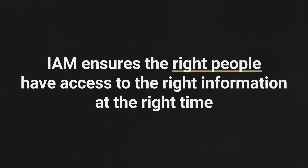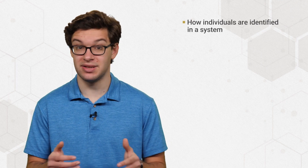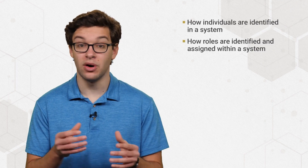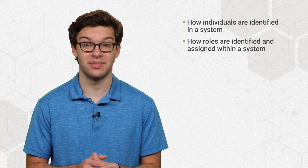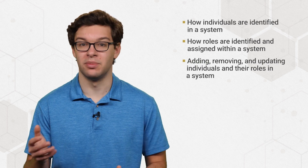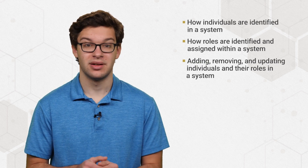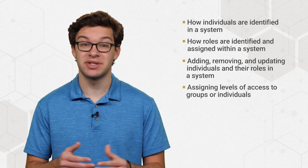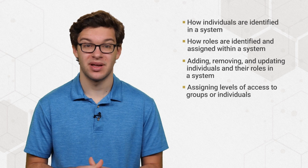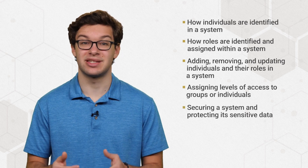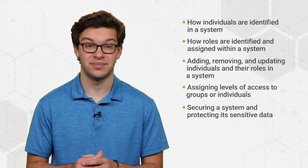IAM ensures the right people have access to the right information at the right time. Specifically, IAM involves how individuals are identified in a system, how roles are identified and assigned within a system, adding, removing, and updating individuals and their roles in a system, assigning levels of access to groups or individuals, and securing a system and protecting its sensitive data.